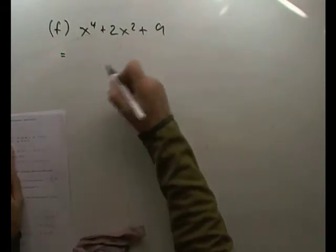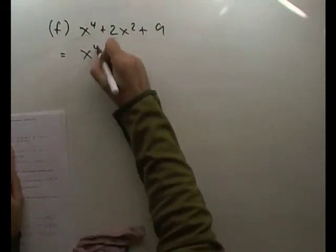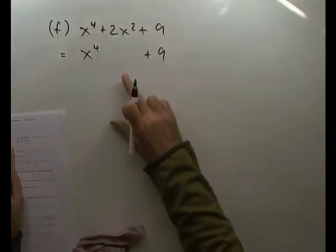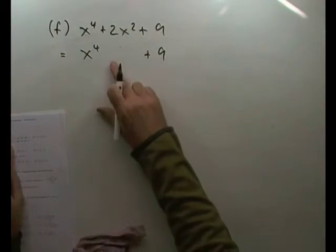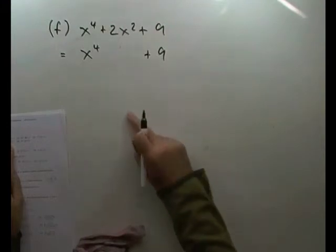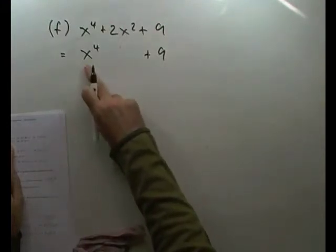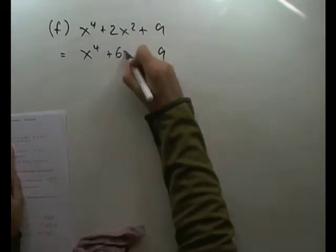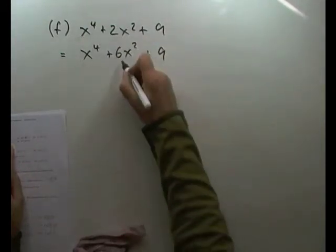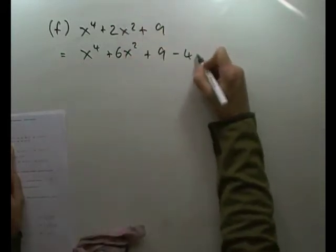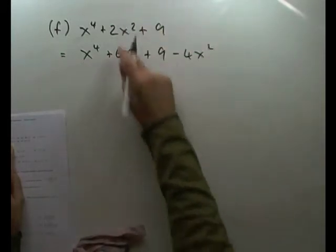So for this one, again, use that technique of introduce a term. If that was x to the 4 and that was 9, and notice there is a similarity with completing the square. Well, I'm not completing the square by amending the end term. I'm completing the square by amending the middle term. With an x squared all squared and a 3, a 6 would be perfect in the middle. So I can do that. Just put in a 6 and amend for it by removing the 4x squared. So I've still got the original value.